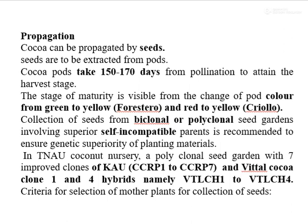Cocoa can be propagated by seed. Seeds are to be extracted from the pods. Pods take 150 to 170 days from pollination to attain harvest stage, that means 5 to 7 months required for maturation after flowering. The stage of maturity is visible from the change of pod color from green to yellow for Forastero and red to yellow for Criollo variety. Collection of seed from bi-clonal or polyclonal seed gardens involving superior, self-incompatible parents is recommended to ensure genetic superiority of planting materials. In TNAU, a polyclonal seed garden with 7 improved clones of Kerala Agriculture University CCRP-1 to CCRP-7 and VTLCC-1 with 4 hybrids namely VTLCH-1 to VTLCH-4 is maintained.